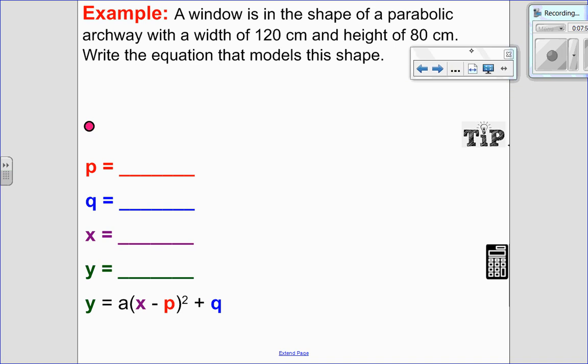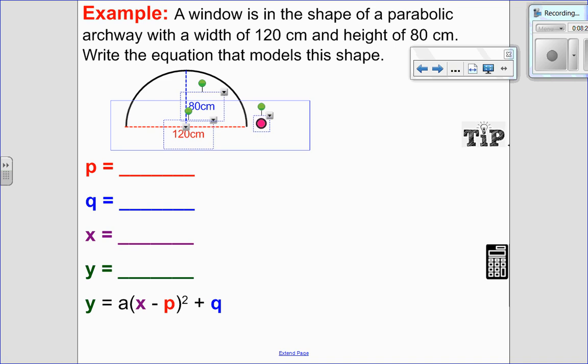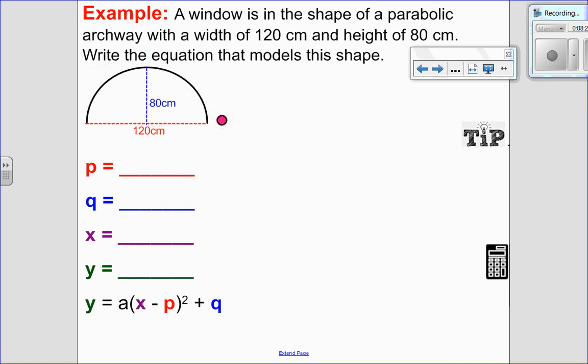In this next example here, I want to do a word problem. So we have a window in the shape of a parabolic archway that has a width of 120 centimeters and a height of 80 centimeters. I want to write an equation that models this shape. So I'm a visual person. I kind of need to see a picture of what that looks like. So there's my parabolic archway. I'm 120 wide and I'm 80 tall. So to come up with the equation, we really need to take this parabola and we need to put it on our Cartesian plane, on our coordinate grid. So where you put the vertex is going to determine what your equation is.